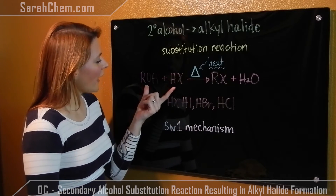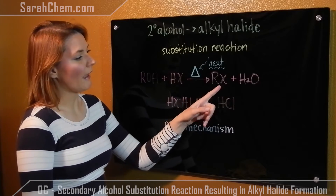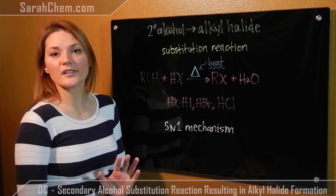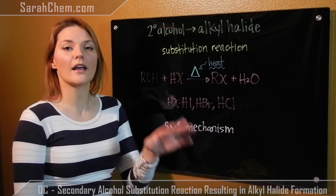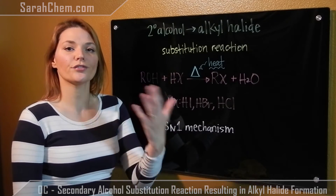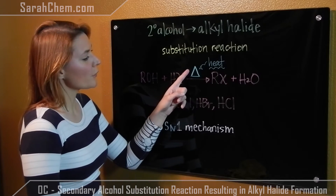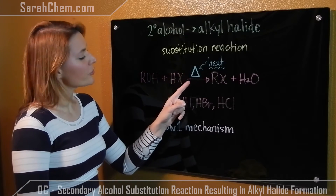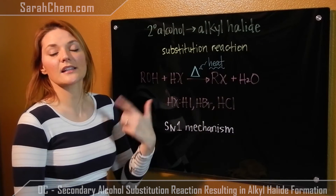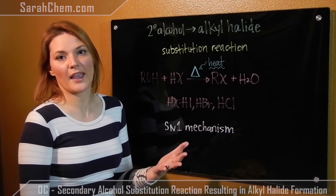In this reaction, once these two undergo an SN1 mechanism, we will form the alkyl halide and water. The big difference between the secondary alcohol and the tertiary alcohol is that for the secondary case, in order for the rate of the reaction to be fast enough, we need to include heat. A delta symbol over the reaction arrow means this will incorporate heat to make the reaction happen at a fast enough pace.